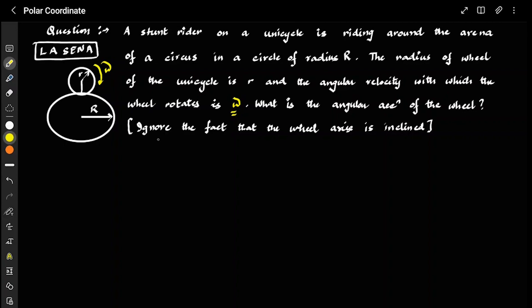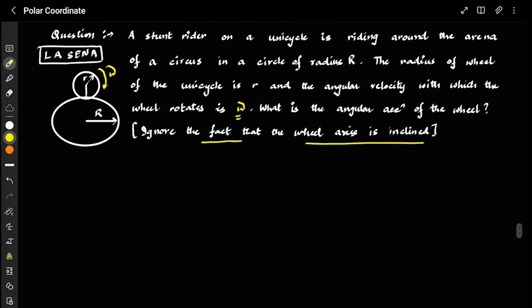You might ask: if the angular velocity is constant, how can there be angular acceleration? That is the interesting part. We can take the wheel center in the same plane of the circle. The direction of omega is perpendicular to the plane of the wheel — if the wheel rotates clockwise, omega points perpendicular to the wheel plane, in the radial direction.